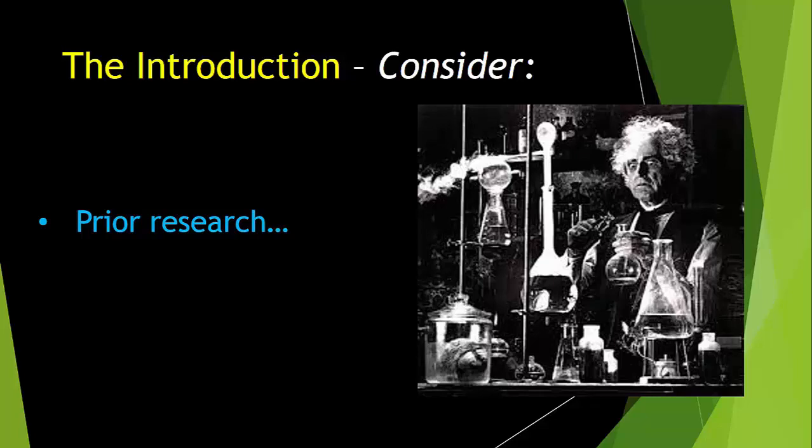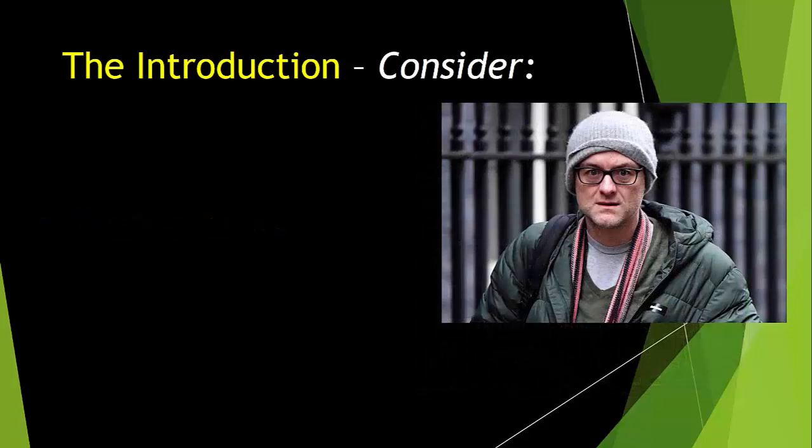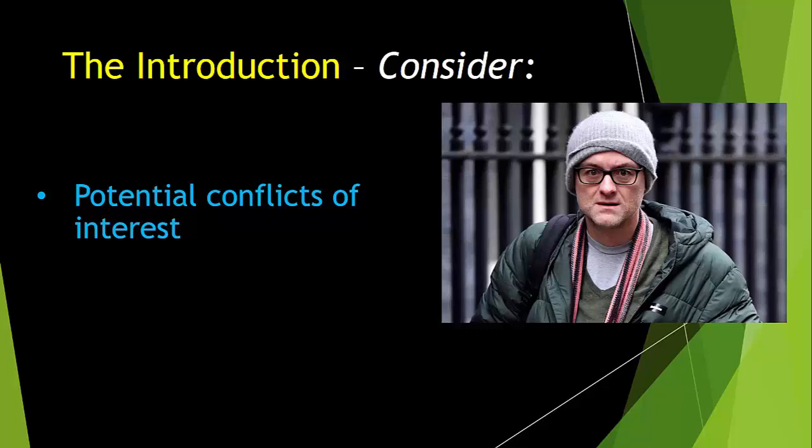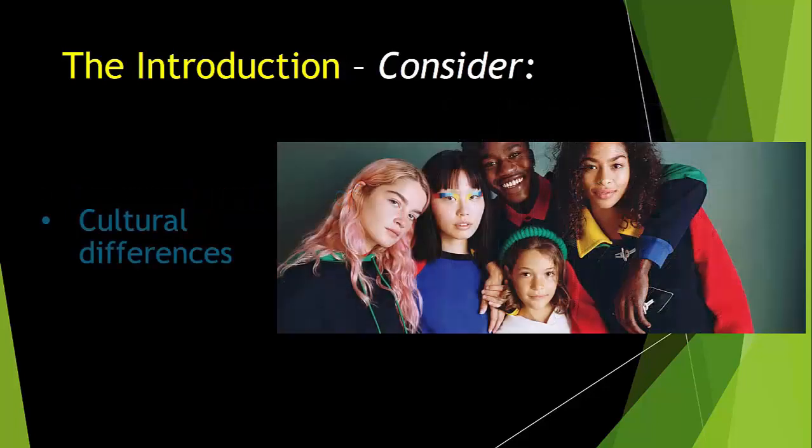Also, have the authors referred to their own prior research perhaps a little too much? We can next consider if there are any potential conflicts of interest, e.g. sponsorships, which have not been clearly declared. Sometimes a simple Google search on the key authors can draw this out. And finally, we might consider if there are possible cultural differences. For example, if you are reading a study carried out with Indian families, but the authors are bringing in research done in other countries. Another example might be carrying out research on a multi-ethnic population, and so aspects of cultural competence need to be considered.